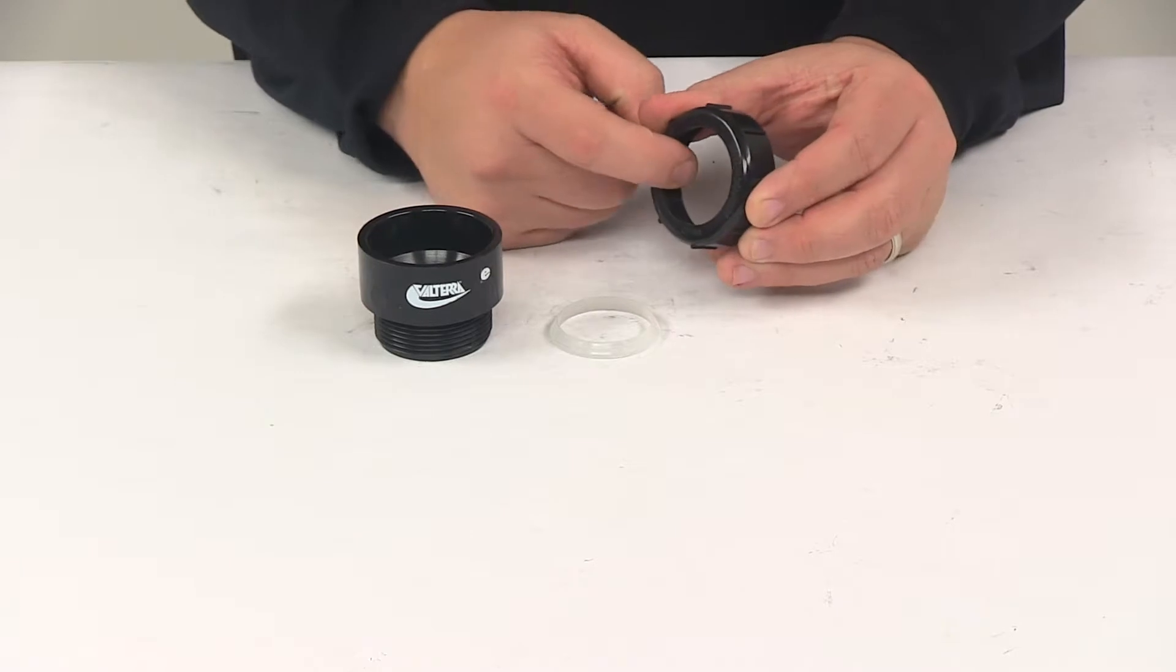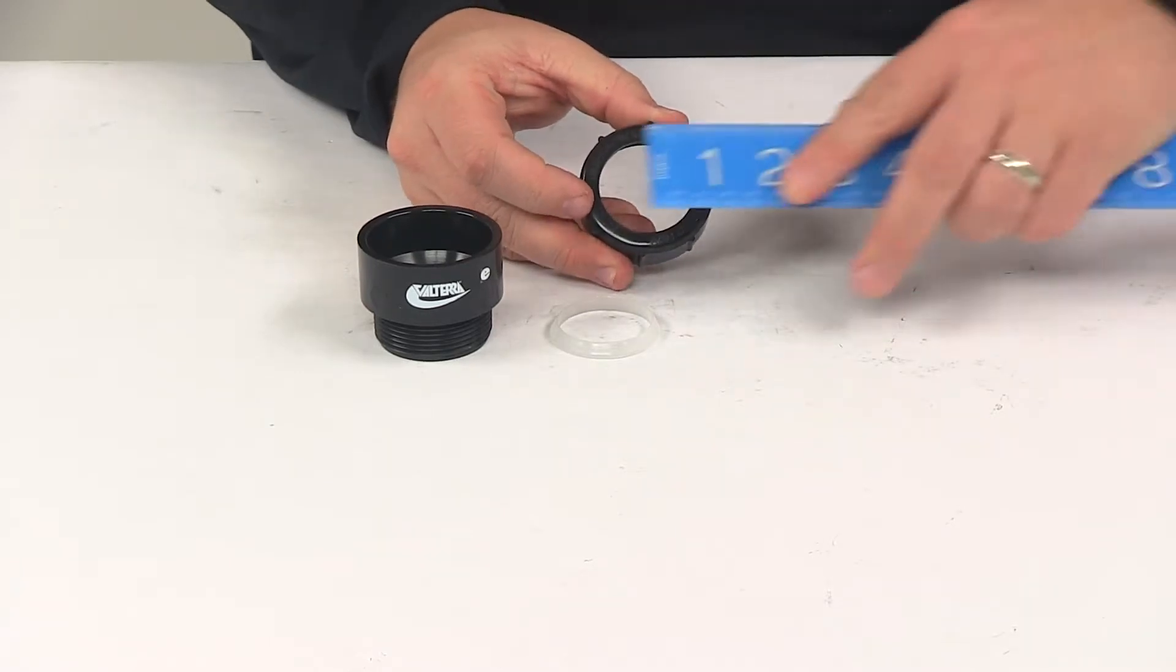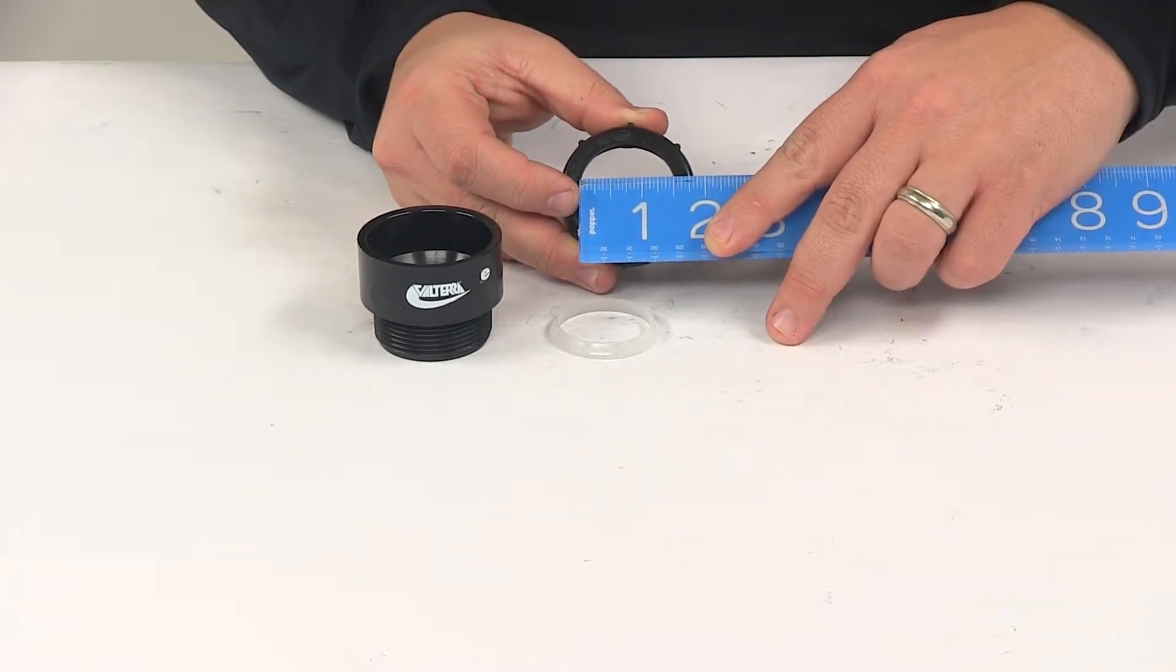The nut would slide onto your pipe first. That's going to give us an inner diameter, measuring that hole right there, of an inch and a half.